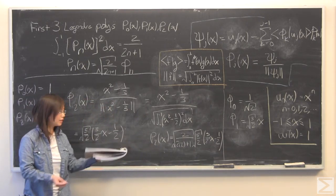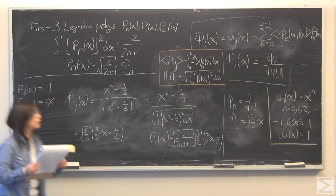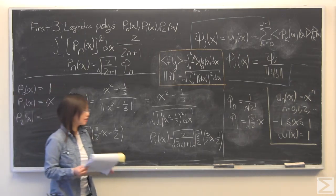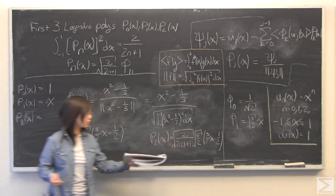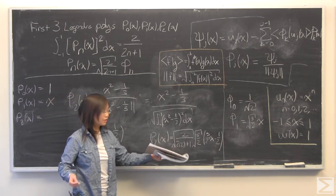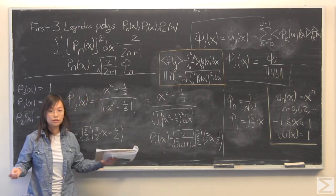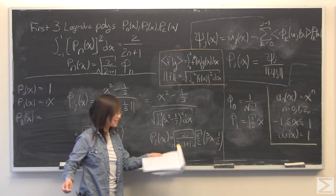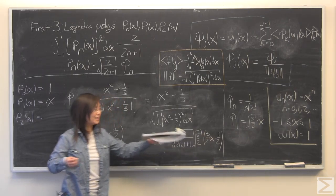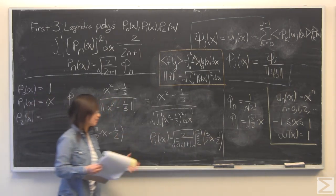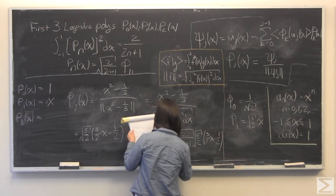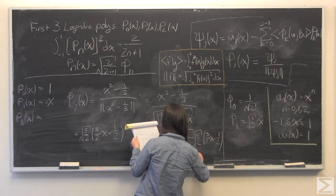The second Legendre polynomial by plugging in n is equal to 2 and solving this. And what you get is square root of 2 divided by 2 times 2, 4 plus 1, square root of 2 over 5, multiplied by square root of 5 over 2, and then multiplied by 3 halves x squared minus 1 half. And that will simplify to 3 halves x squared minus 1 half.